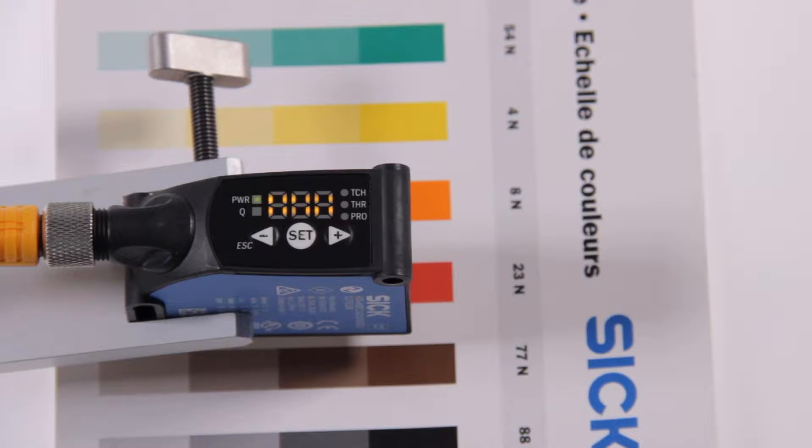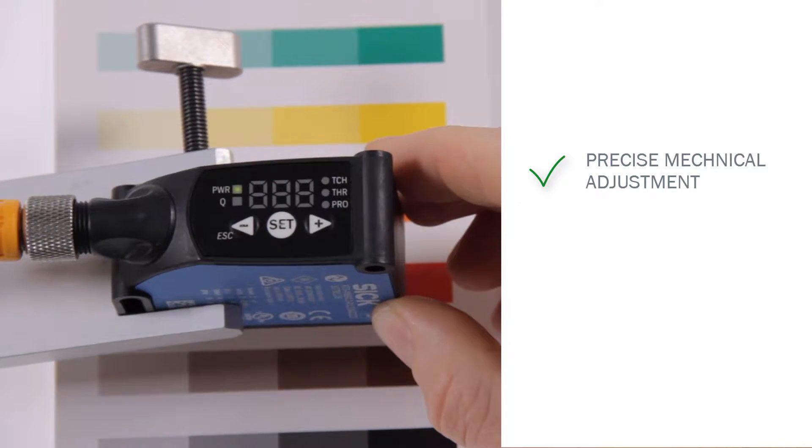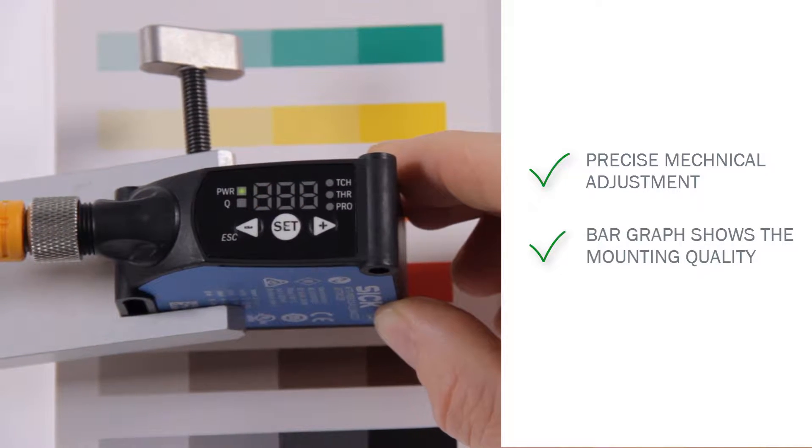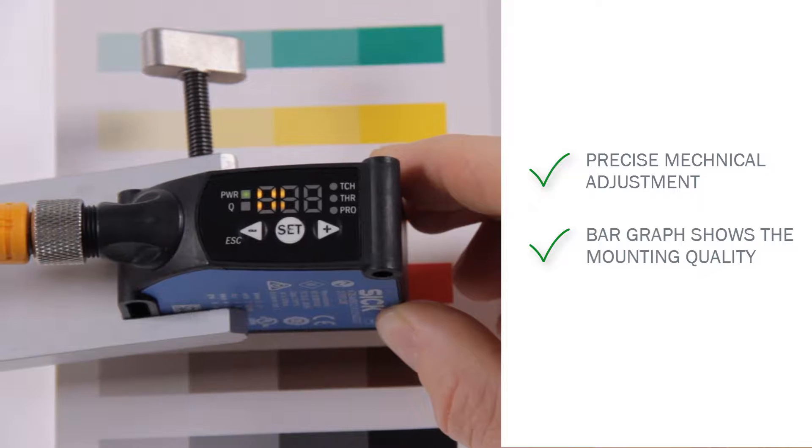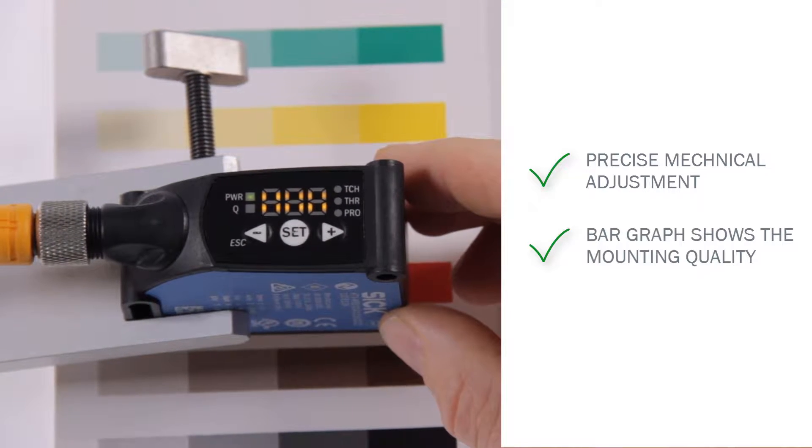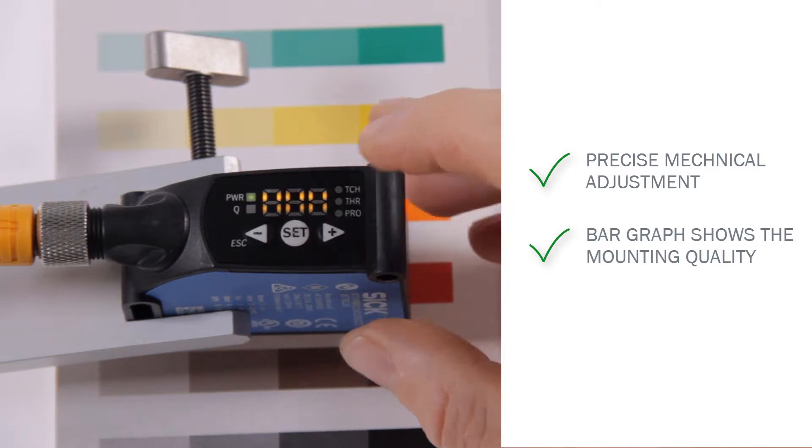Mounting feedback. When setting up the sensor for the first time, the so-called mounting feedback is active. This function allows a precise mechanical adjustment regarding sensing distance of the sensor. The bar graph shows the mounting quality. The more bars are shown, the better the mounting and sensing distance. When the adjustment is done, finish the procedure by pressing SET.